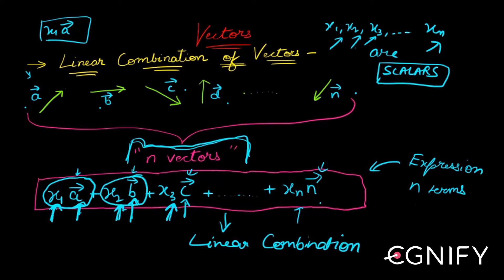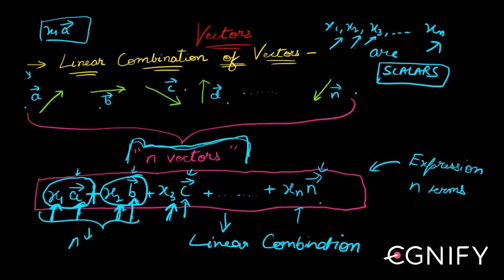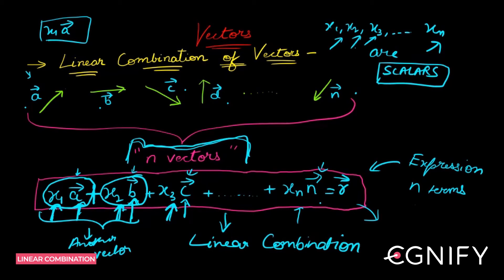So x1·ā becomes another vector, x2·b̄ becomes another vector, and now I'm adding these together. All these vectors — each multiplied by a scalar and then vectorially added — will finally give rise to another vector. Let that be r̄. So this r̄ is your final vector, which is a linear combination of all these vectors.